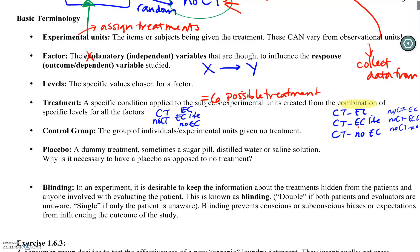Our control group consists of the people who are not given a treatment — in this case, the no-CT group. This is necessary because we need to show that the treatment is working better than nothing. If we just gave every class a CT and saw improvement, it might be the CTs helping, or it might be that students who enroll in spring are just different from those who enroll in fall.